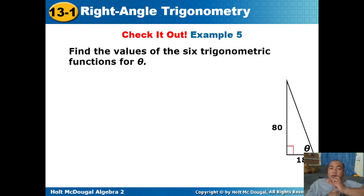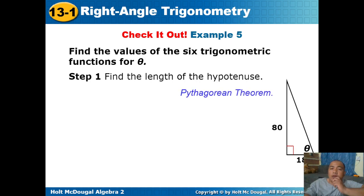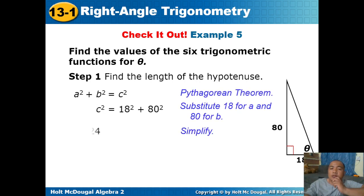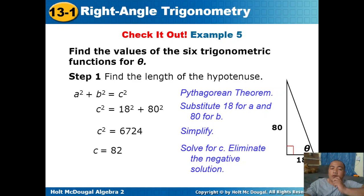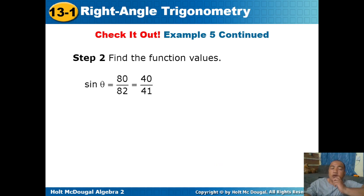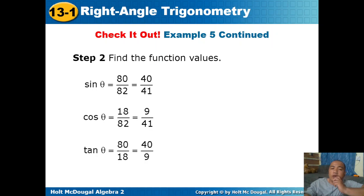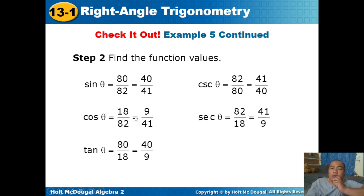Find the values of the 6 trigonometric functions for theta given legs 80 and 18. First find the hypotenuse: 80 squared plus 18 squared equals 6,724. The square root of 6,724 is 82. So the sides are 80, 18, and 82. Sine theta equals 80 over 82, or 40 over 41. Cosine theta equals 18 over 82, or 9 over 41. Tangent theta equals 80 over 18, or 40 over 9. Cosecant theta equals 41 over 40. Secant theta equals 41 over 9. Cotangent theta equals 9 over 40.